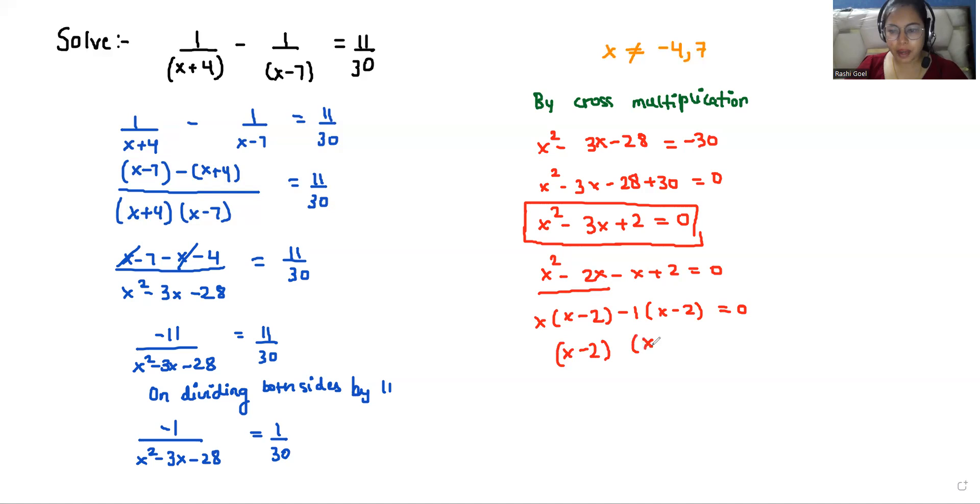So (x-2) is common, giving us (x-2)(x-1) equals 0. That means either x-2 equals 0 or x-1 equals 0. So the value of x will be 2 and the value of x will be 1 also.